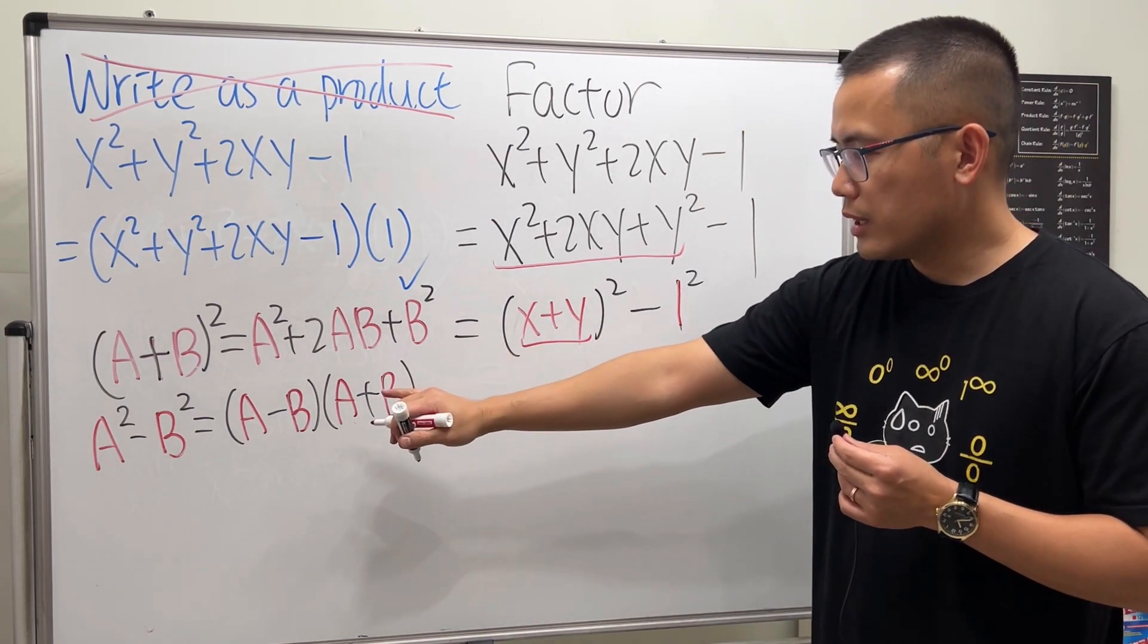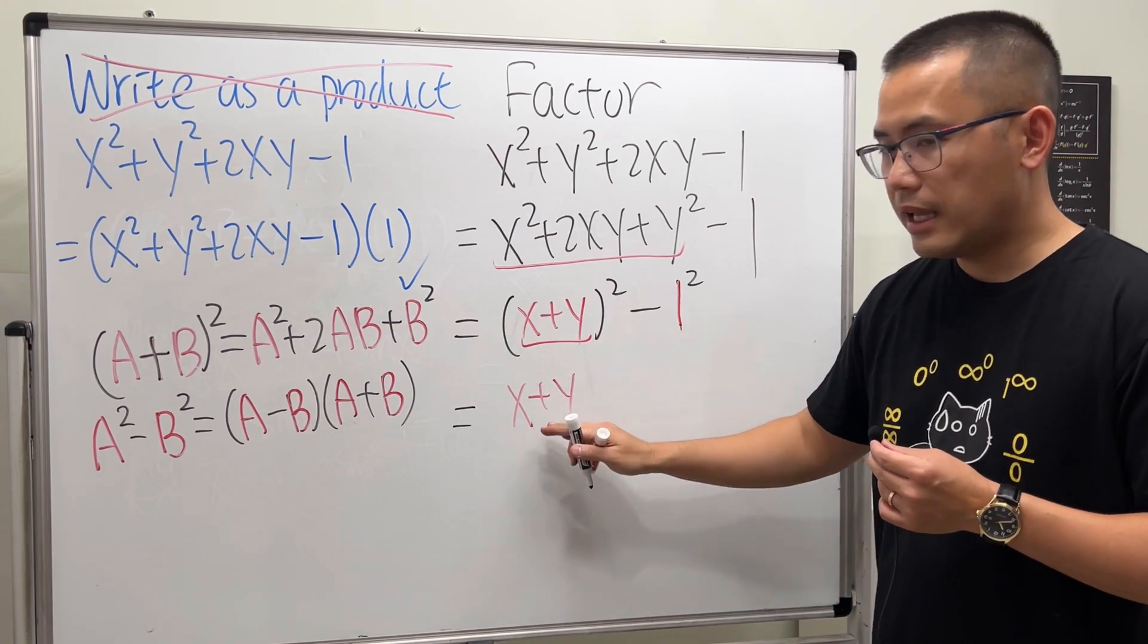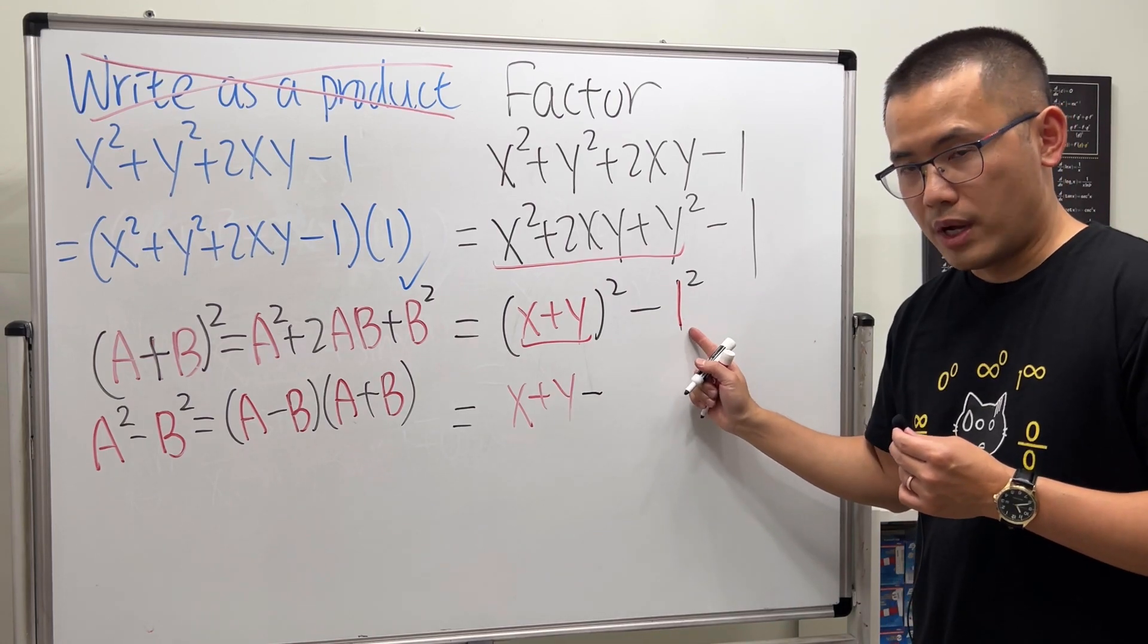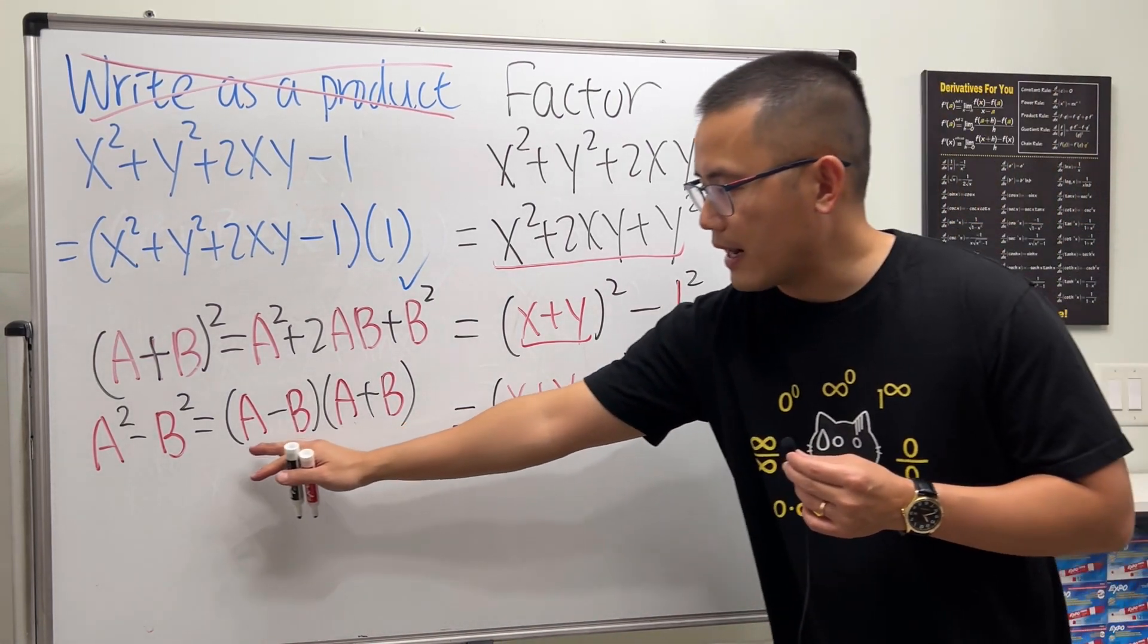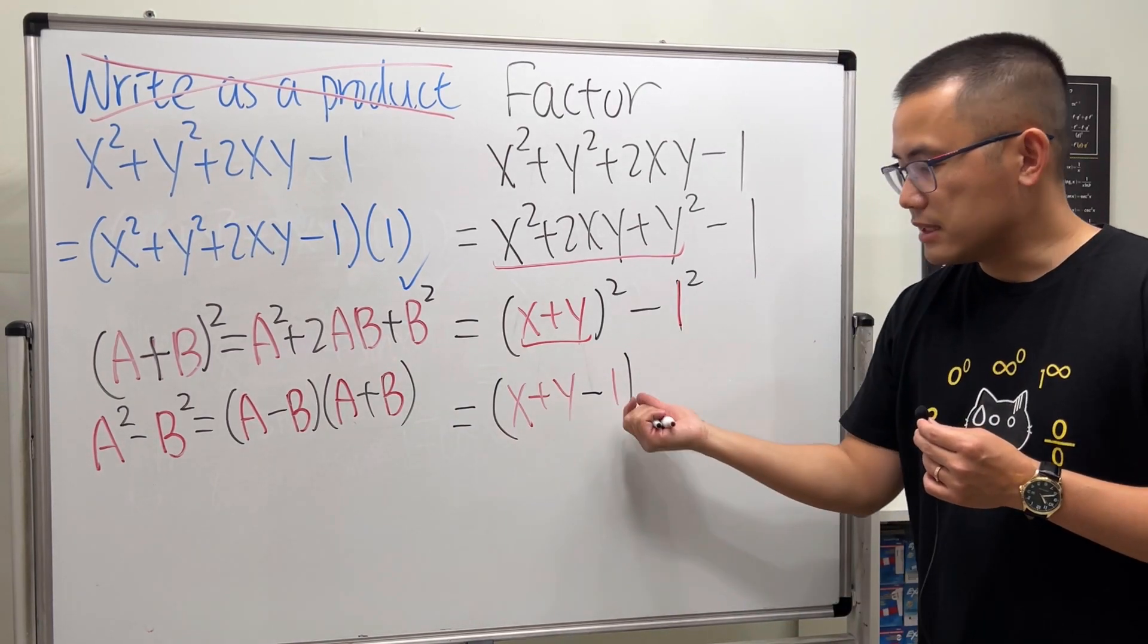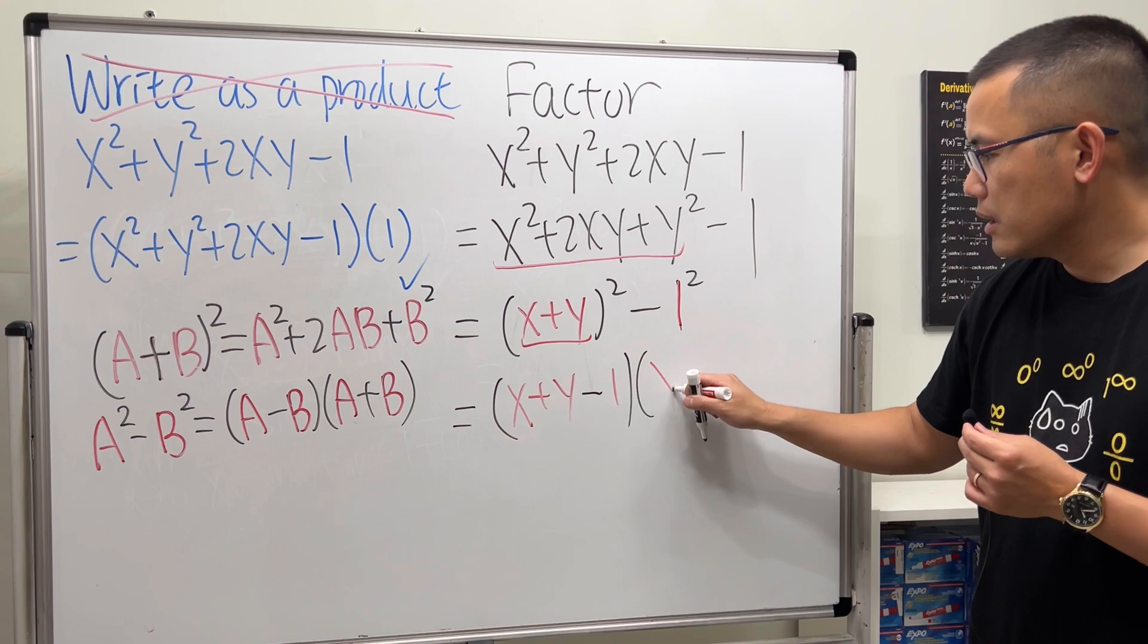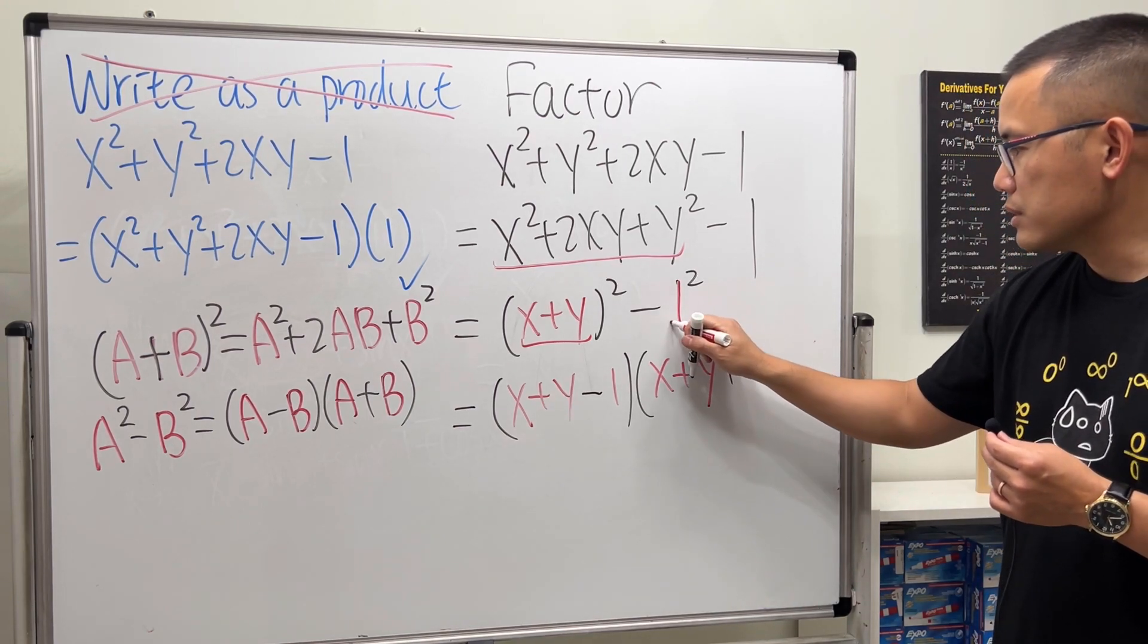So right here, this would be our a. Let's go ahead and write that down. We get (x+y). Now that's the a, and then we will have to minus the b, which is the one, so minus one. So it's like this for the first factor, a-b. And then the second parentheses will give us just a, which is x+y, and then plus b, which is this one right here.